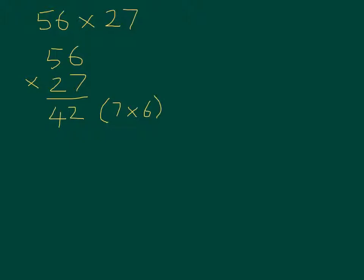Next it will be 7 times, not 5, but 50, remember that's in the tens column, which is 350. That's 7 times 50. So I've completed the first part of the multiplication.